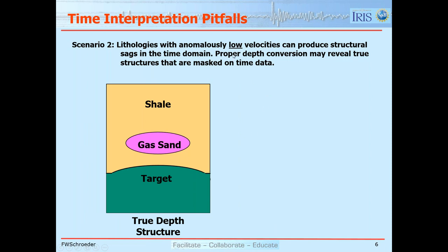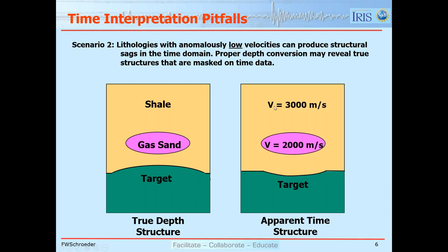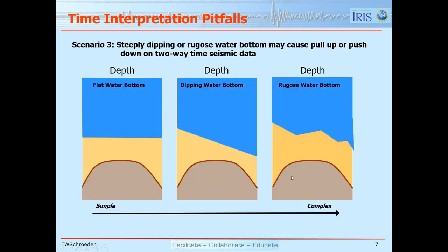The opposite is also true. If we have low velocities, such as a gas sand where velocities are less than those to either side, we have a true depth structure with a slight high in the deepest green layer. Using those velocities, we actually get a sag — so instead of an anticline in depth, on the two-way travel time it looks like a syncline. Knowing that lateral velocity changes can cause these anomalies is an important lesson for seismic interpreters.